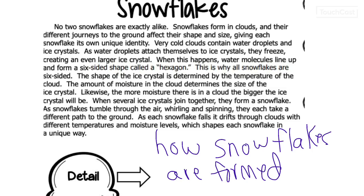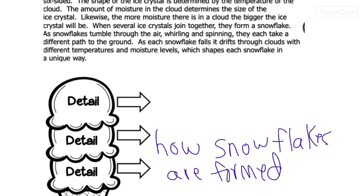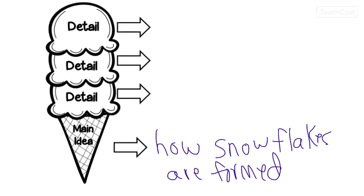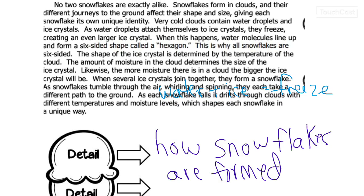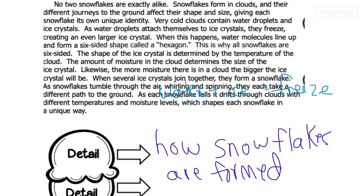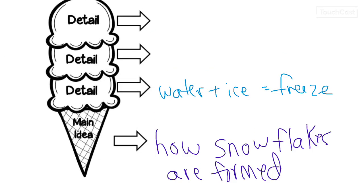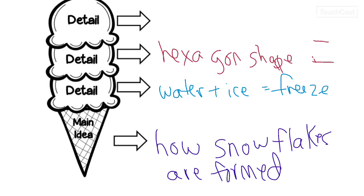As water droplets attach themselves to ice crystals, they freeze. So water droplets plus ice crystals — they freeze together. They make a hexagon. That's the shape — hexagon shape. A hexagon is six sides.